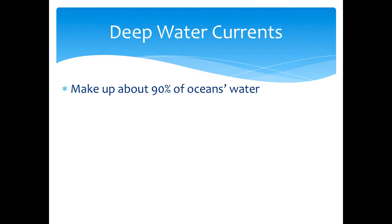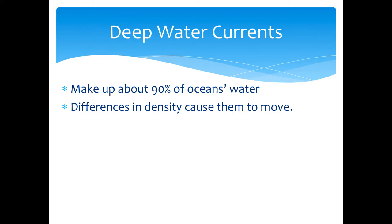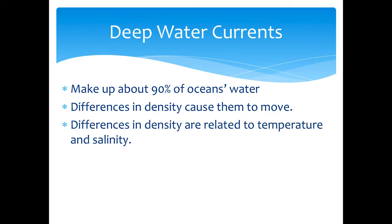Deep ocean currents make up ninety percent of the ocean's water. The differences in density cause them to move really slow because they're super dense and salty. The cold ocean deep currents move slowly because of cold temperature and salinity — that is a very testable fact. The differences in temperature and salinity, and the fact that they're super cold and super salty, is what causes them to move so slow.